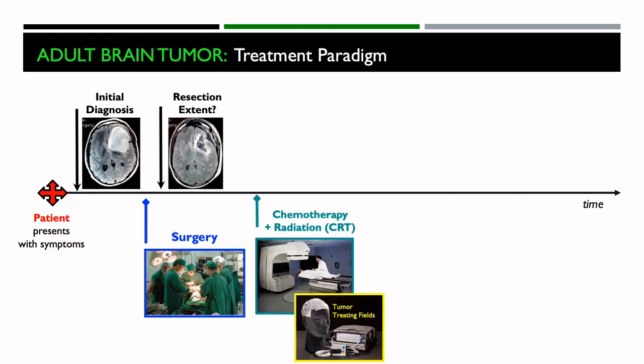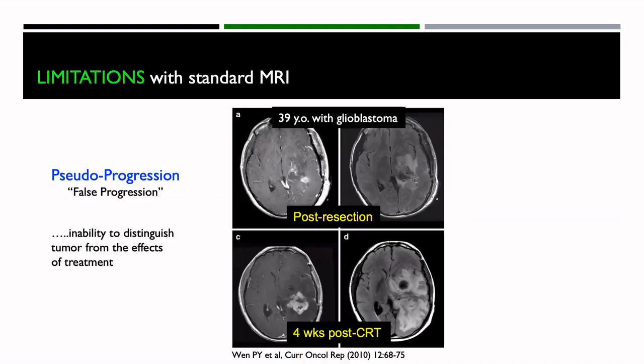The next step is chemotherapy plus radiation therapy, or possibly tumor-treating fields, and again we monitor MRIs to determine if there's a recurrence. There are limitations with standard MRI, and one that's become quite well-known is called pseudoprogression — which stands for false progression. It basically describes the inability to distinguish tumor from the effects of treatment.